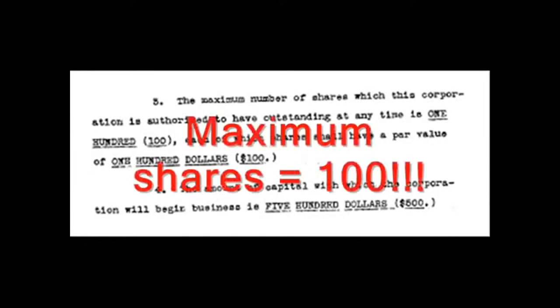The business of the corporation is from time to time to do any one or more of the acts and things herein set forth, and it may conduct business in the state of Florida, other states, the District of Columbia, the territories and colonies of the United States, and in foreign countries. The maximum number of shares which this corporation is authorized to have outstanding at any one time is 100, each of which shares shall have a par value of $100. The amount of capital with which the corporation will begin business is $500. The corporation is to have perpetual existence.